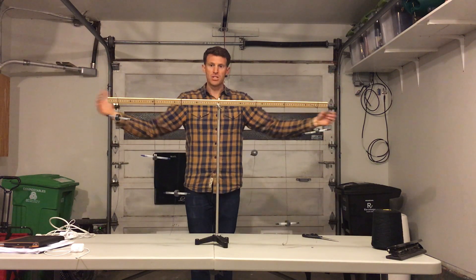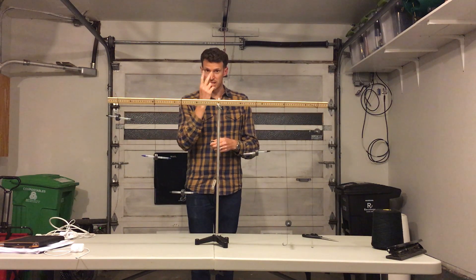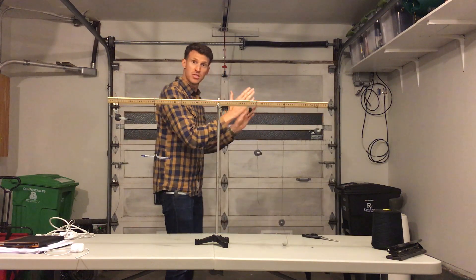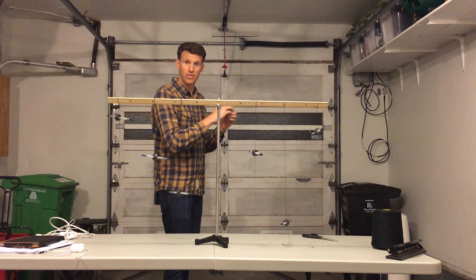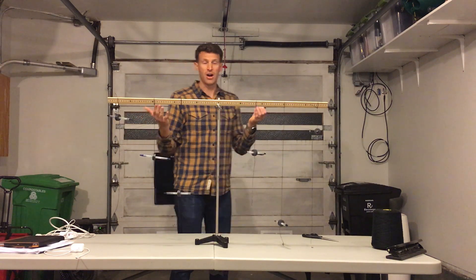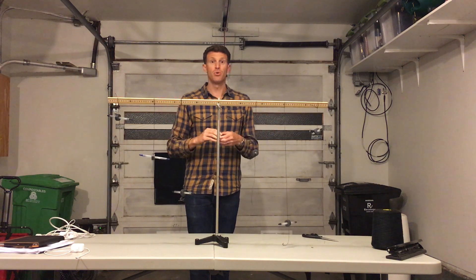And so each of these is sensitive enough because they're free to twist that they can align with the Earth's magnetic field, and they are all pointing to the north. So these are essentially very simple compasses.